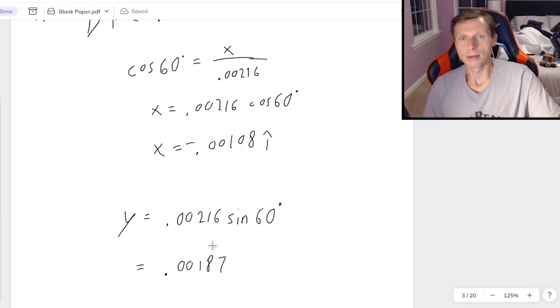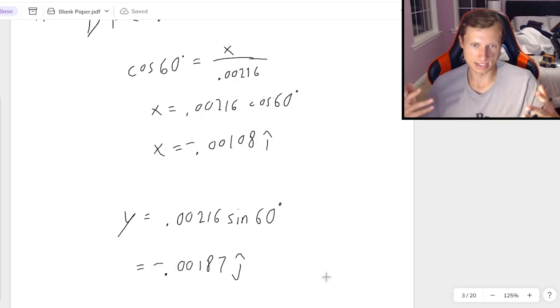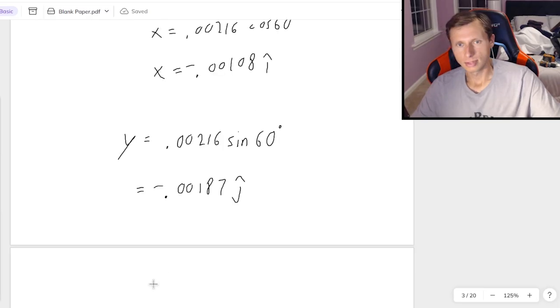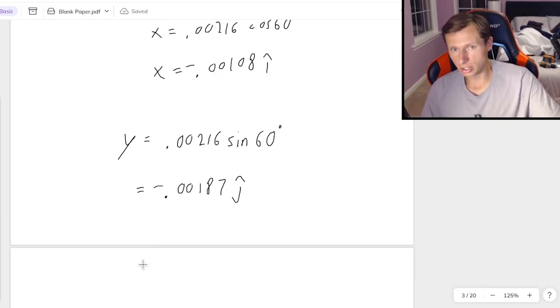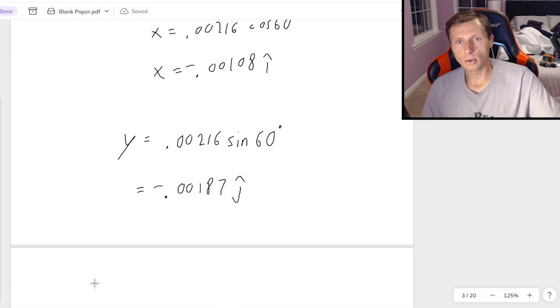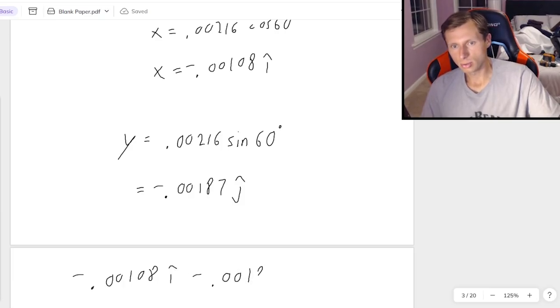Now for those of you watching at home, what is the direction of this going to be? Obviously it's down, but how am I going to answer that in terms of i hat and j hat? The answer is negative j hat, because down is negative j hat. And so now that vector I had earlier, the 0.00216, has now become negative 0.00108 i hat minus 0.00187 j hat.